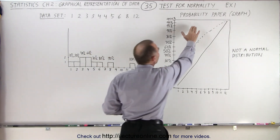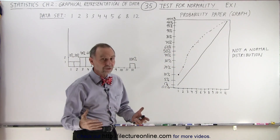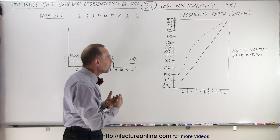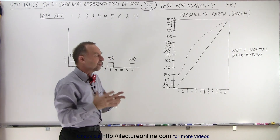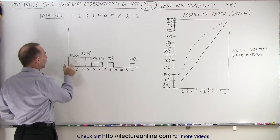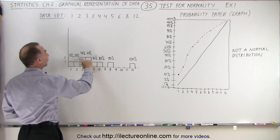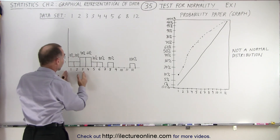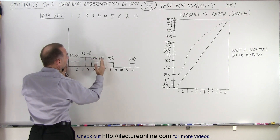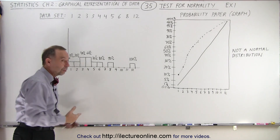We set up what we call a probability paper or a probability graph. On the horizontal axis, we put all the possible values that the data points can have. On the vertical axis, we have a semi-logarithmic scale of the probability, or the percent of the data set that falls within that range. For example, if we were to draw an OGIF curve, we would see that 10% is taken up by the first data point, 20% by the first two, and since there are two occurrences of three, we have 40% by the first three data points. Then including the number 4, we're up to 60%, then 70%, 80%, 90%, and 100% of the total data — because there are 10 data points, each represents 10% of the total.